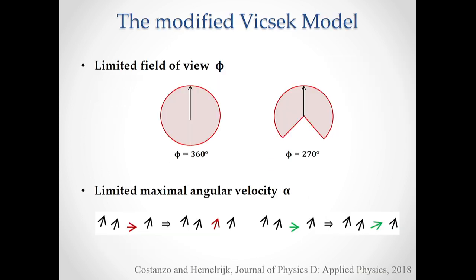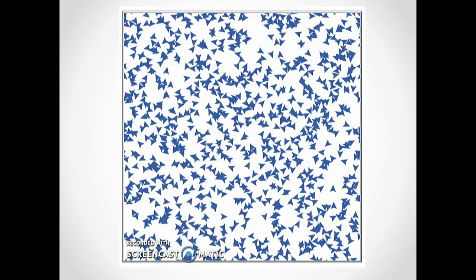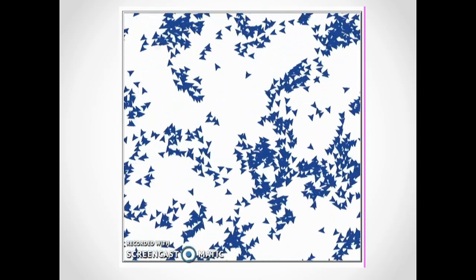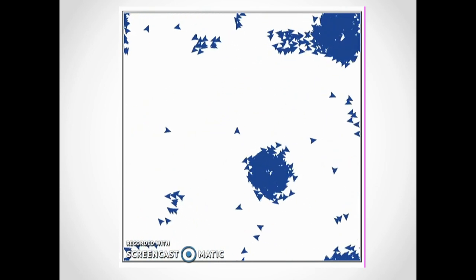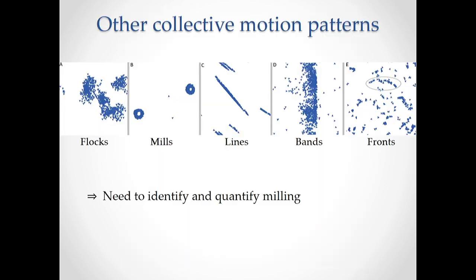So we modify the Vicsek model by introducing a limitation on the field of view with a blind angle in the back, and a limited maximal angular velocity — which means that a particle cannot instantaneously go to the average orientation of neighbors, but can only rotate towards it by a maximal angular velocity. Implementing this and starting from a random configuration in a quadratic box with periodic boundary conditions, we see that milling spontaneously emerges, and actually here we also have multiple mills and counter-rotating mills.